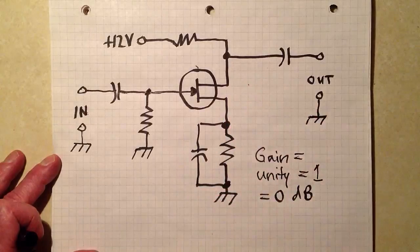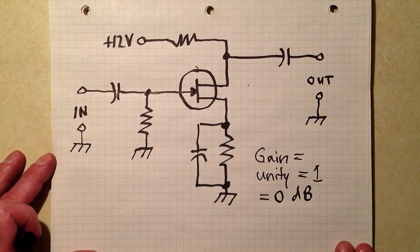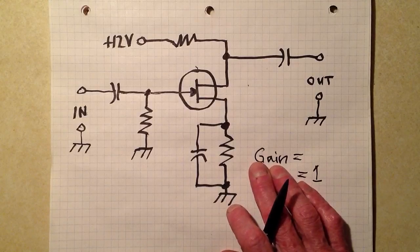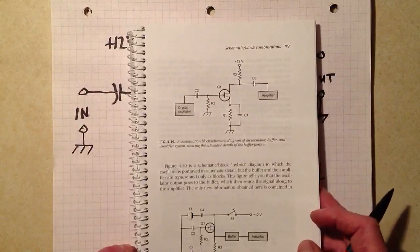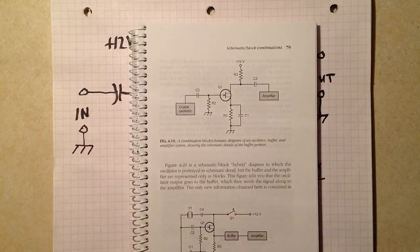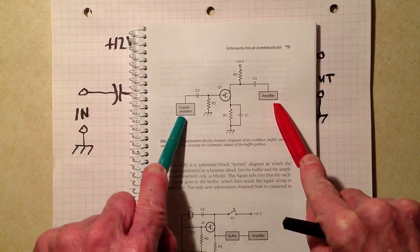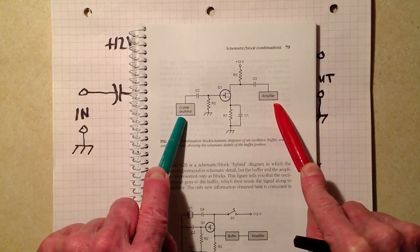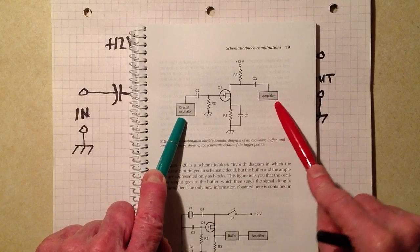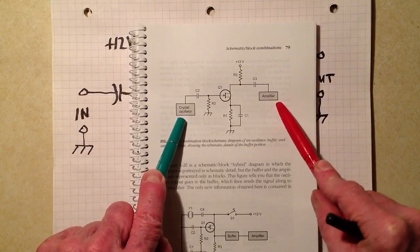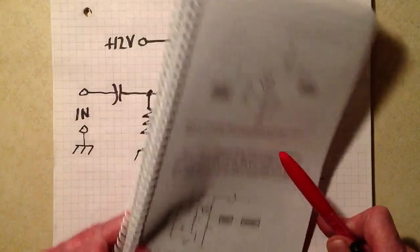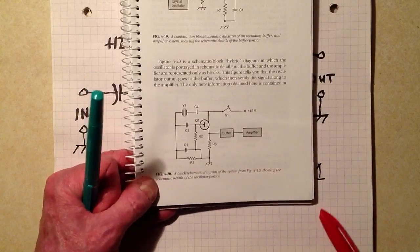But anyway, this is basically just an amplifier like the other amplifier was. But its purpose, once again, is to isolate between two other circuits. In the case of a very simple crystal-controlled transmitter that you might build if you're a ham radio operator and you want to do a little old-fashioned operating, you can go ahead and build an oscillator like the one in figure 4-20.